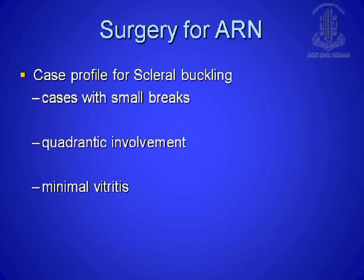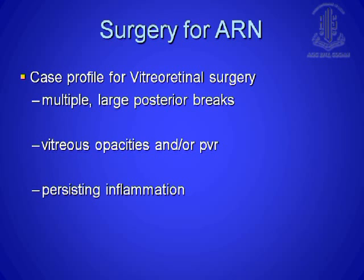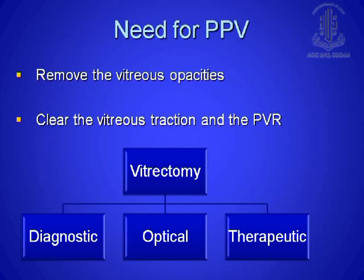For surgeries in ARN, it is very rare to do a scleral buckle — that would only be for the ideal case with small breaks, a single quadrant, and minimal vitritis. But usually you will never end up doing that. You will have to do vitrectomy because of vitreous opacities, PVR already present, persisting inflammation, and large posterior breaks. The goals of vitrectomy are to remove vitreous opacities and clear vitreous traction and PVR — so it can be diagnostic, optical, and therapeutic all in one surgery.